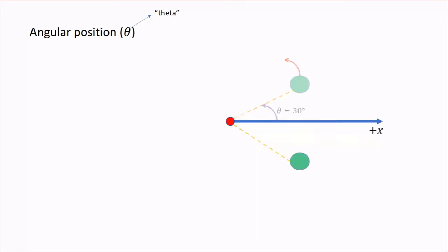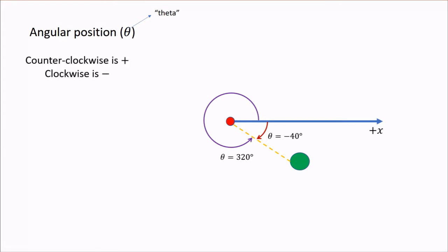If the object was here, then the angular position is measured as about 320 degrees, which is just 40 degrees short of coming back full circle. You could also call this position negative 40 degrees, which means that it is 40 degrees from positive x when measured clockwise, instead of the usual counterclockwise. The sign convention, in general, will be counterclockwise is positive and clockwise is negative.